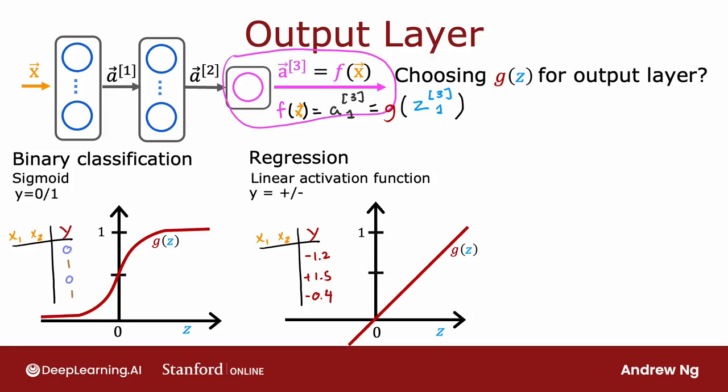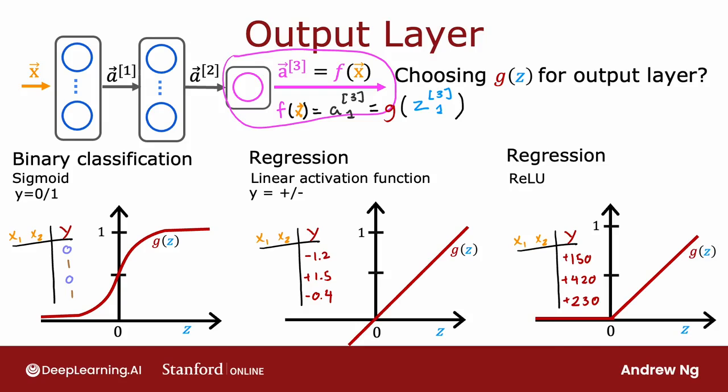Finally, if Y can only take on non-negative values — such as if you're predicting the price of a house, which can never be negative — then the most natural choice would be the ReLU activation function, because this activation function only takes on non-negative values: either zero or positive. So when choosing the activation function for your output layer, there is usually one fairly natural choice depending on the label Y you're trying to predict, and this guidance is how I pretty much always choose my output layer activation function.